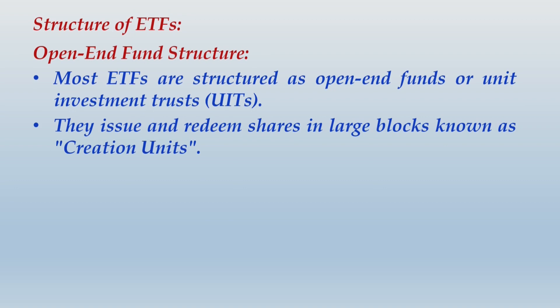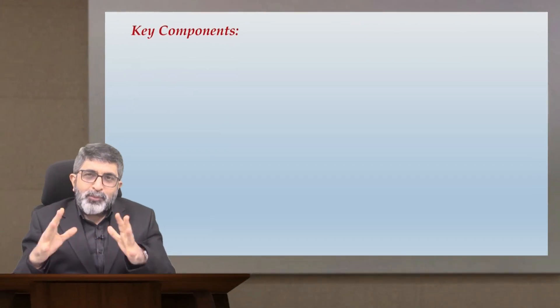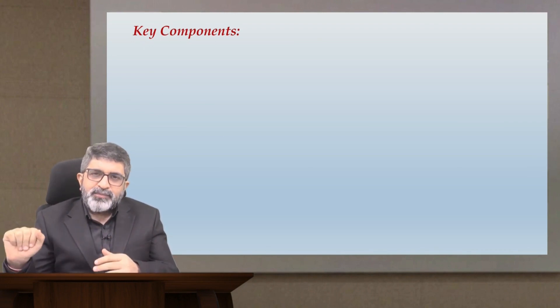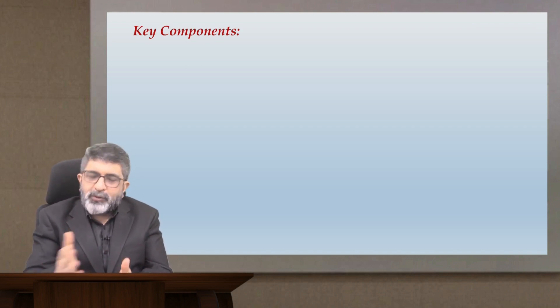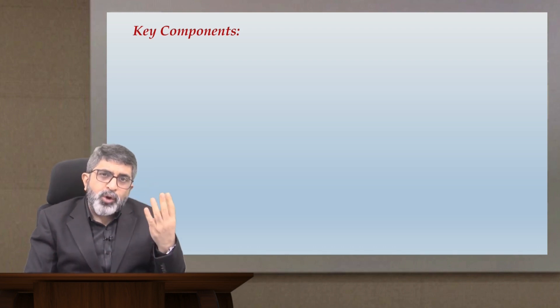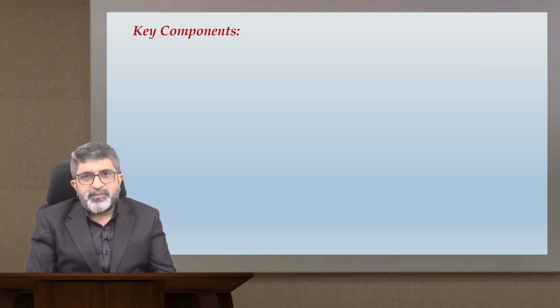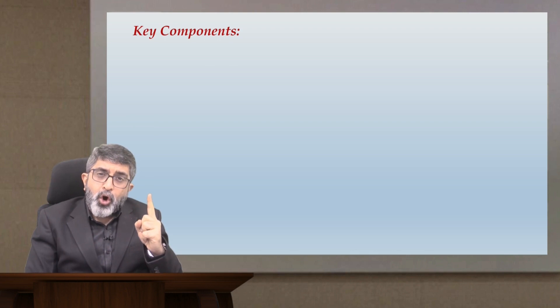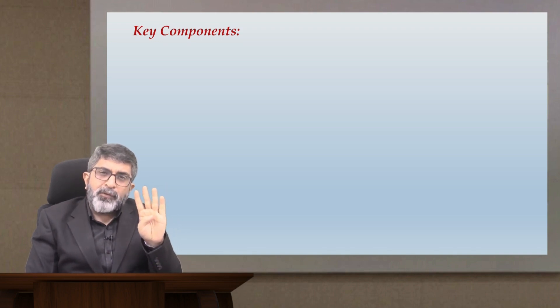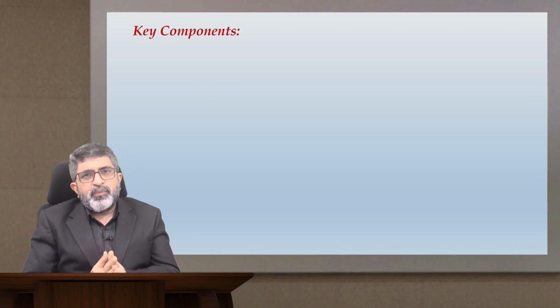Let us now talk about the key components of an ETF — meaning the key participants involved in its management. Setting investors aside, there are four key parties: number one is the sponsor or issuer of the ETF, number two is the custodian, number three is the authorized participant, and number four is the market maker.